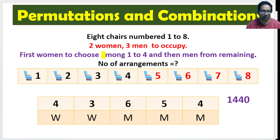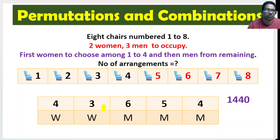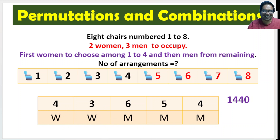By the number of women and number of seats, we just choose women first — how many options for each woman — and then how many options for each man. Okay, like this. Thank you.